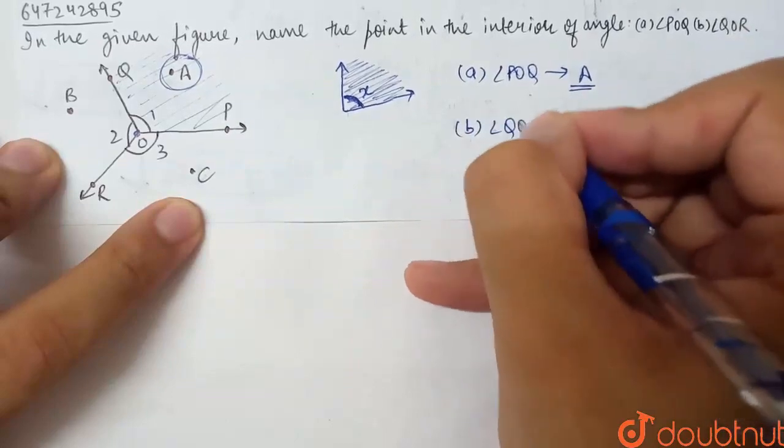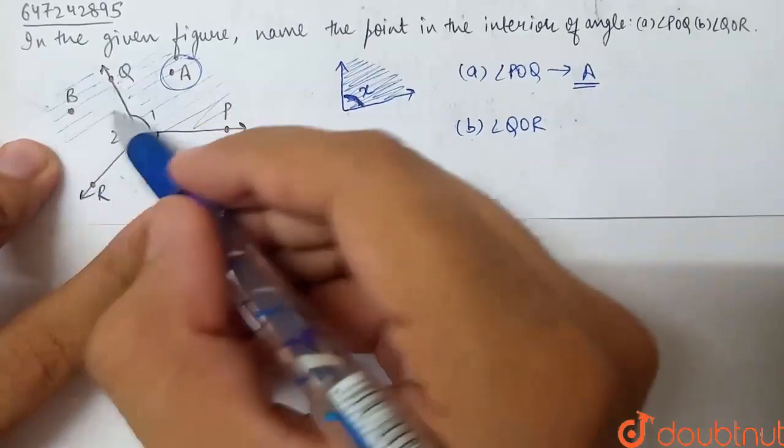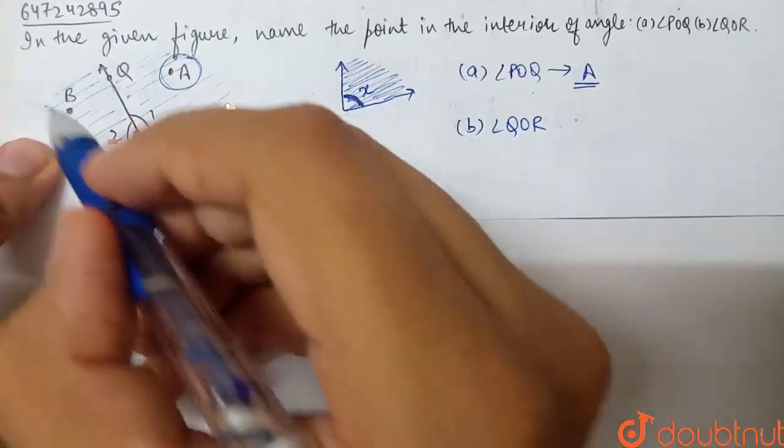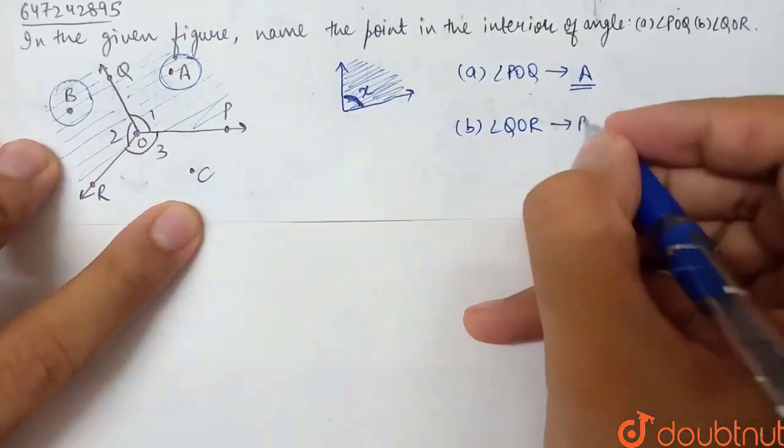Similarly, angle QOR. Look at QOR. So, this is our region, angle 2, and the interior point is B. Therefore, our interior point is B.